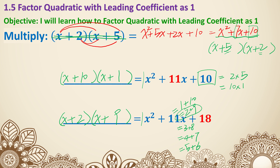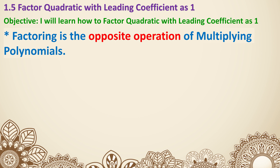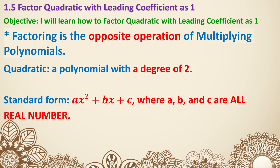Now let's move on to some definitions. Factoring is the opposite operation of multiplying polynomials — that's why you can always use multiplication to check if you factored correctly. A quadratic is a polynomial with a degree of 2; you will always see x squared in the expression or equation. Standard form for a quadratic is ax squared plus bx plus c, where a, b, and c are all real numbers. There is one extra requirement: a cannot be 0, because if a is 0 you don't have an x squared term and it would just be bx plus c, which is linear. b and c can be 0, as long as you have the x squared term.